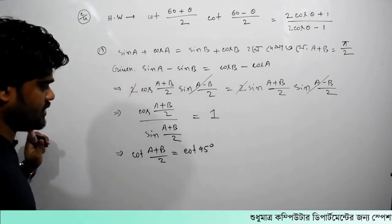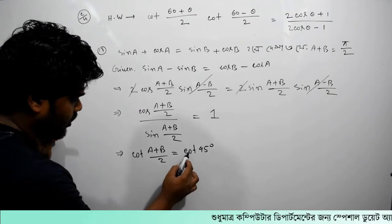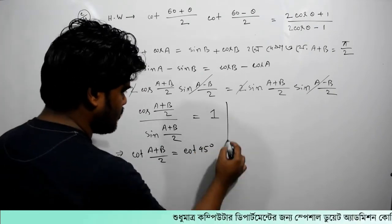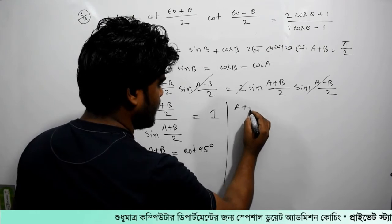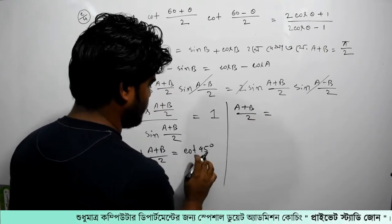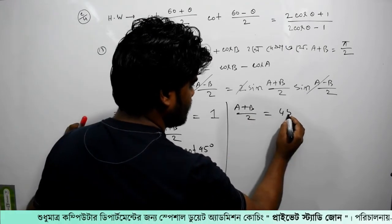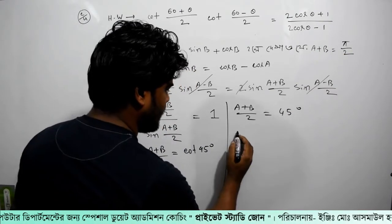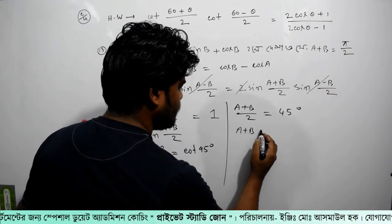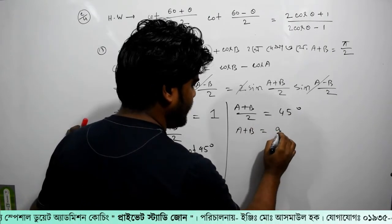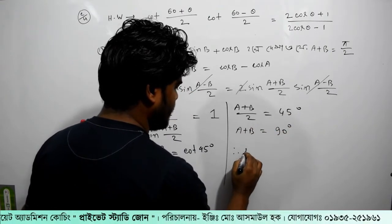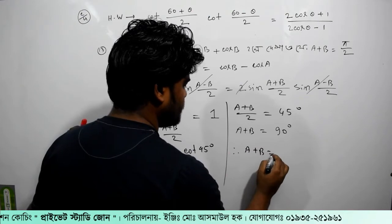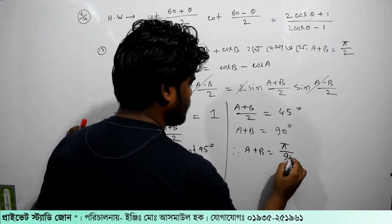So, I take cos(A minus B) by 2. A plus B by 2 is equal to A minus B by 2 is equal to 45 degrees. So, as we find, cos(A minus B) by 2 is equal to sin. A plus B is equal to π by 2.